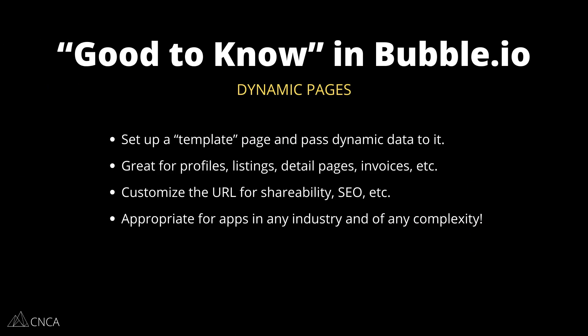You have the ability to create and take advantage of a listing system, a profile system, or any kind of detail page — which will let you really scale your application. It doesn't matter how many records or entities there are in the database; they all follow this one template. You also have the ability to customize the URL on this dynamic page so that if you want to share the page with someone, you have a unique address that takes the user there and passes the right information. Bubble actually has multiple ways of customizing that URL.